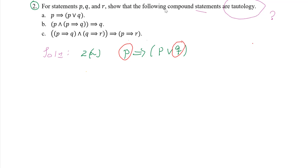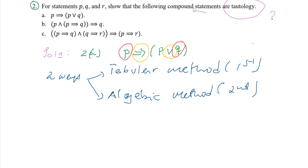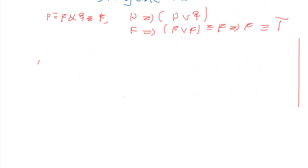We have here one logical connective, which is implication, and another logical connective, which is disjunction. There are two methods. The tabular method: a tautology must have a truth value of true for every combination of truth values. So we will draw a table with columns for P, Q, P or Q, and P implies P or Q.